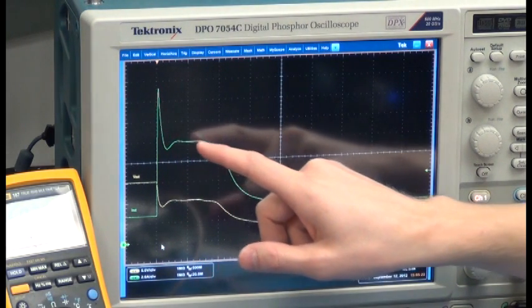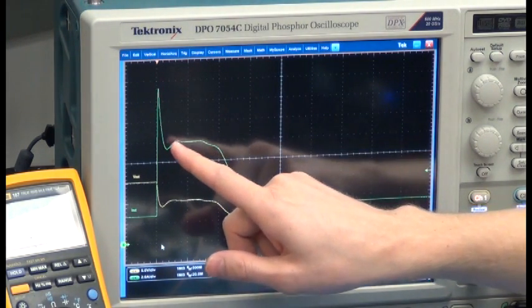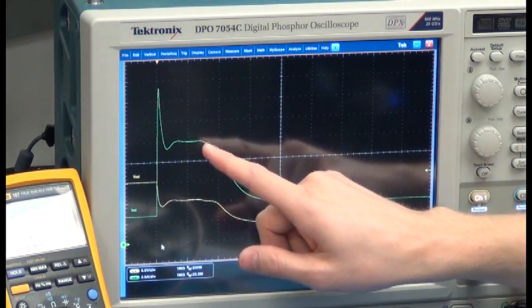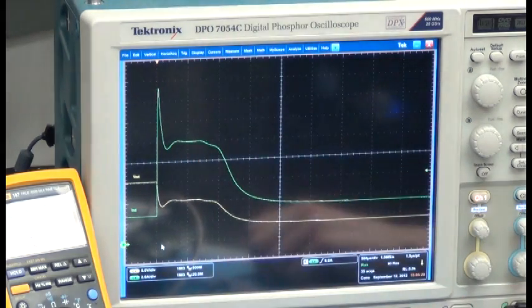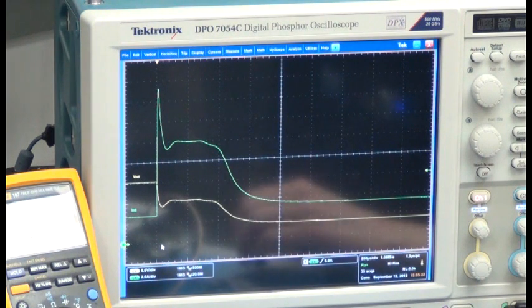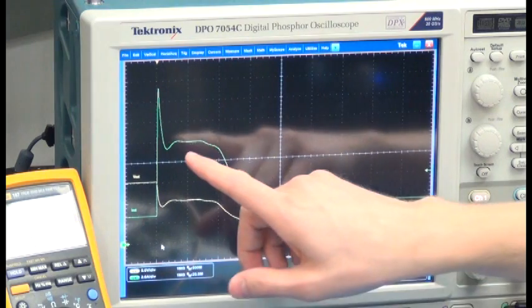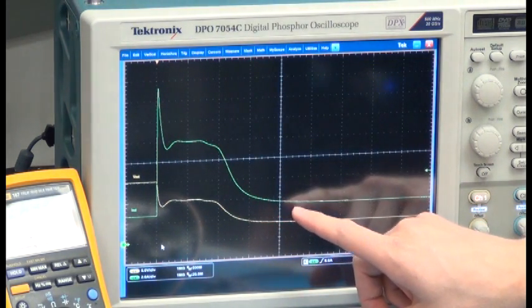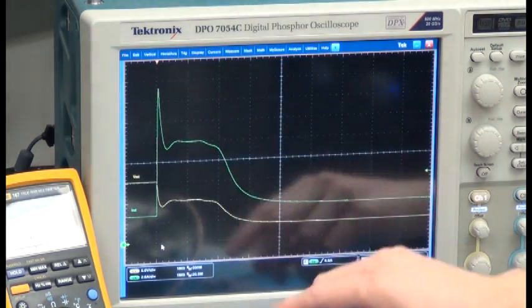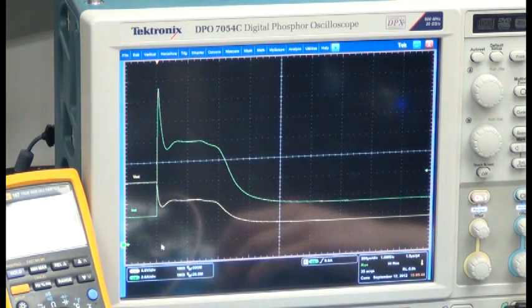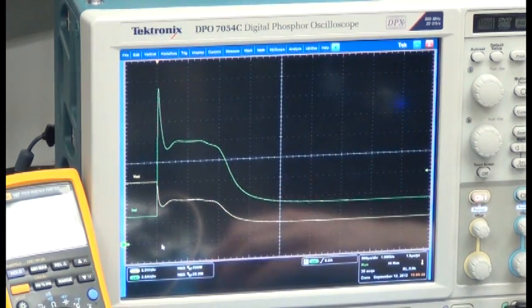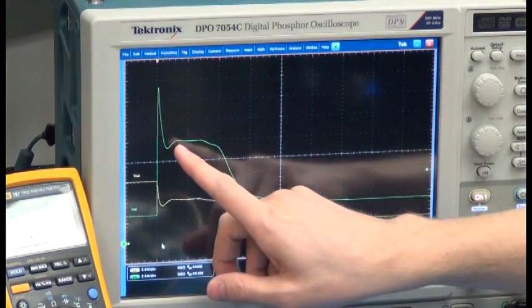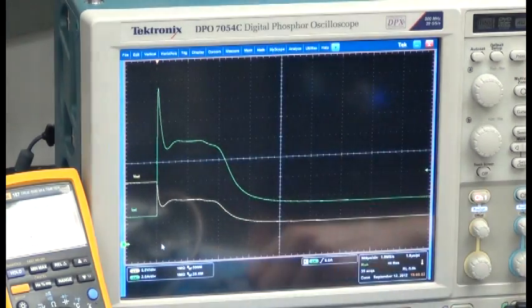After that, we see this plateau in the output current for about 500 microseconds. This is actually the input current being limited by our cycle by cycle current limit. We have a delay before the output current limit takes over, and this filters out any glitches or short transients on the output from inadvertently tripping the output current limit.